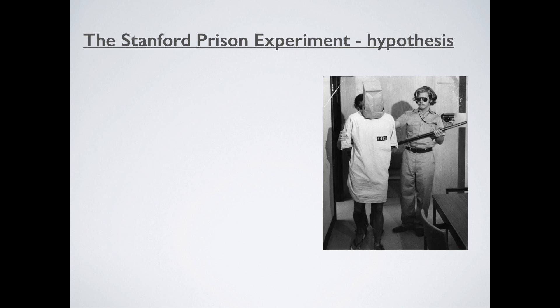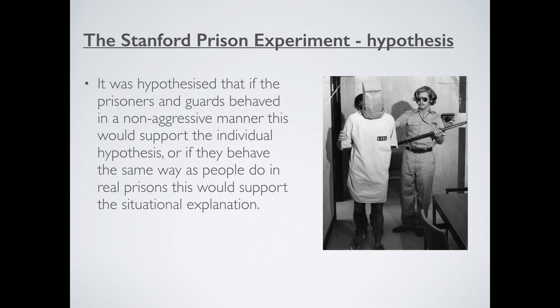The hypothesis behind this goes something like this. If the prisoners and guards behaved in a non-aggressive manner — they just run their little prison and nothing really bad happens — then that supports the individual hypothesis. Zimbardo can say for a fact that prison guards in American prisons are just sadistic; they attract those type of people. However, if the guards and prisoners in his experiment behave the same way as real prisoners and guards do, then this would support the situational explanation — it's nothing to do with the people themselves, it's the situation they're pushed into.